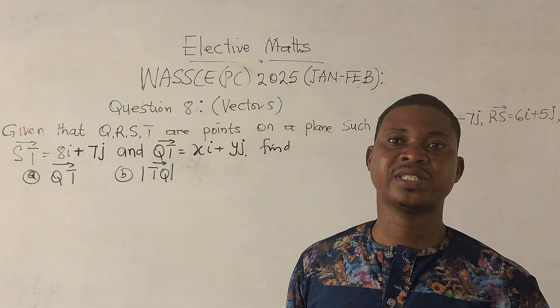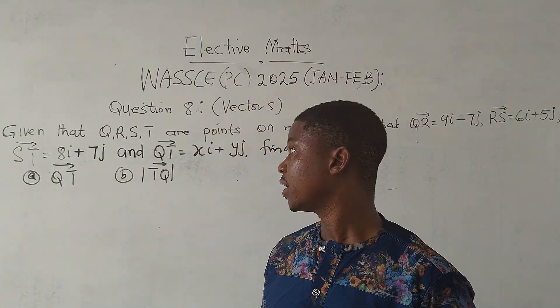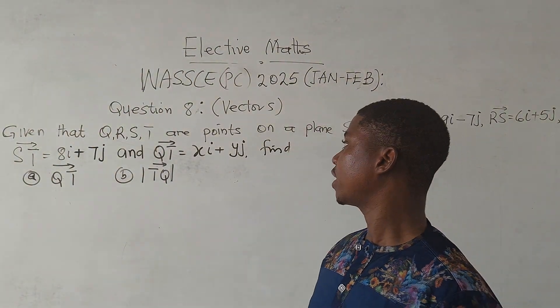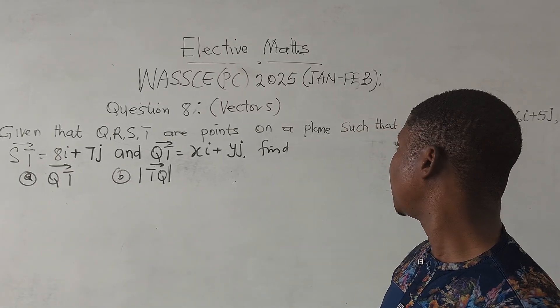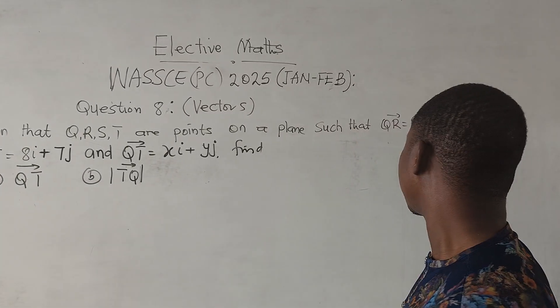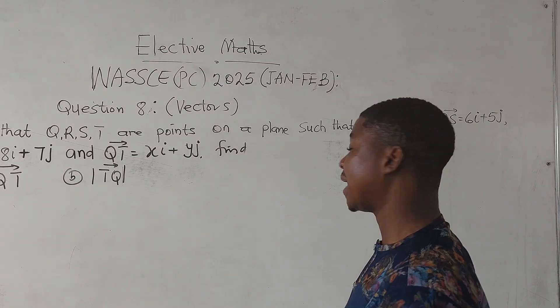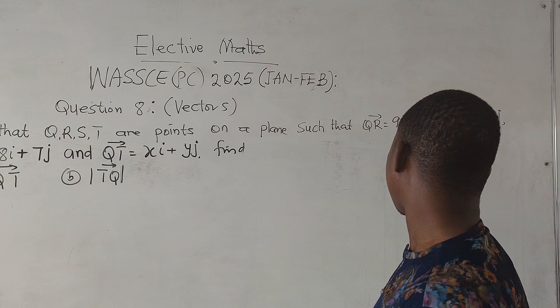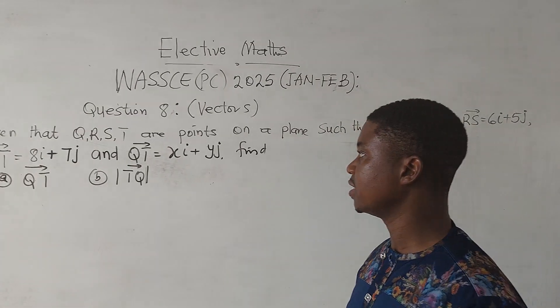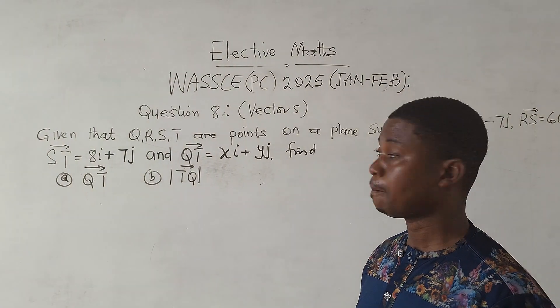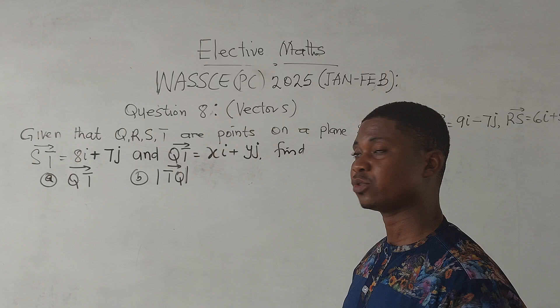And we are going to look at question number 8, which borders on vectors. And the question reads: given that Q, R, S, T are points on a plane such that QR = 9i - 7j, RS = 6i + 5j, ST = 8i + 7j, and QT = xi + yj.